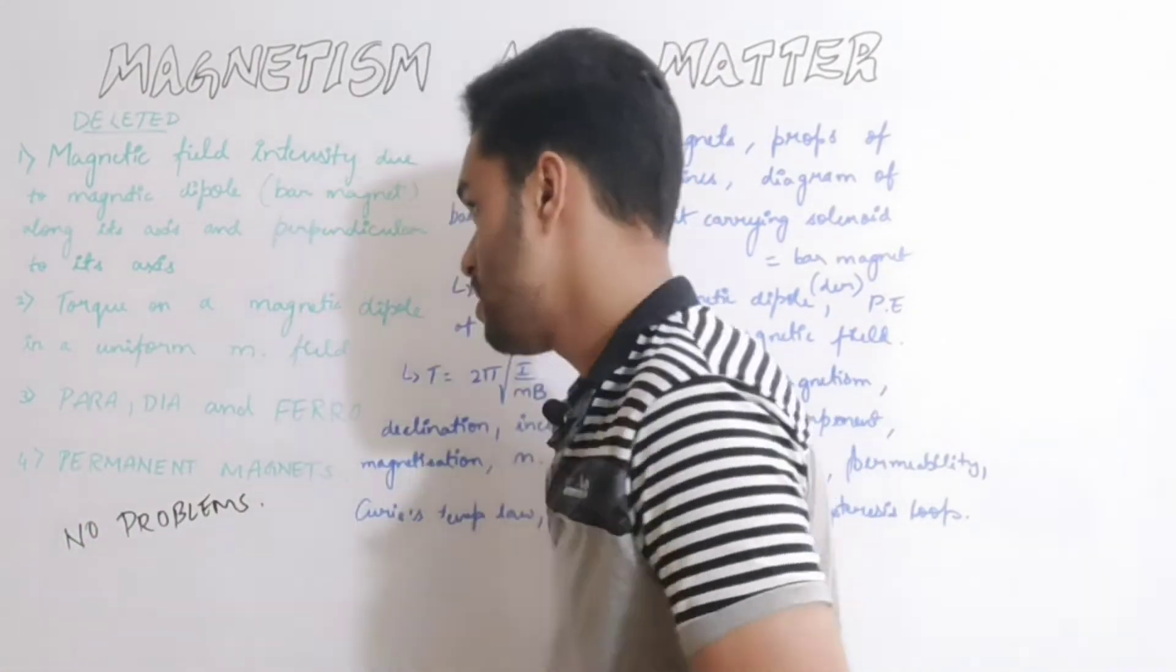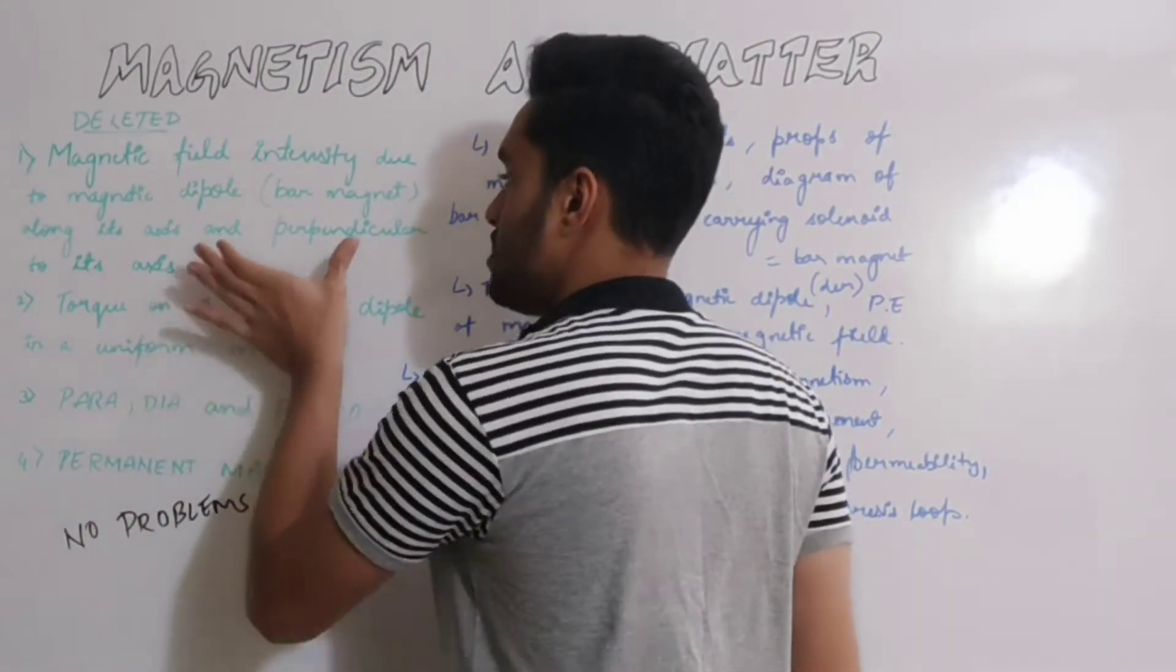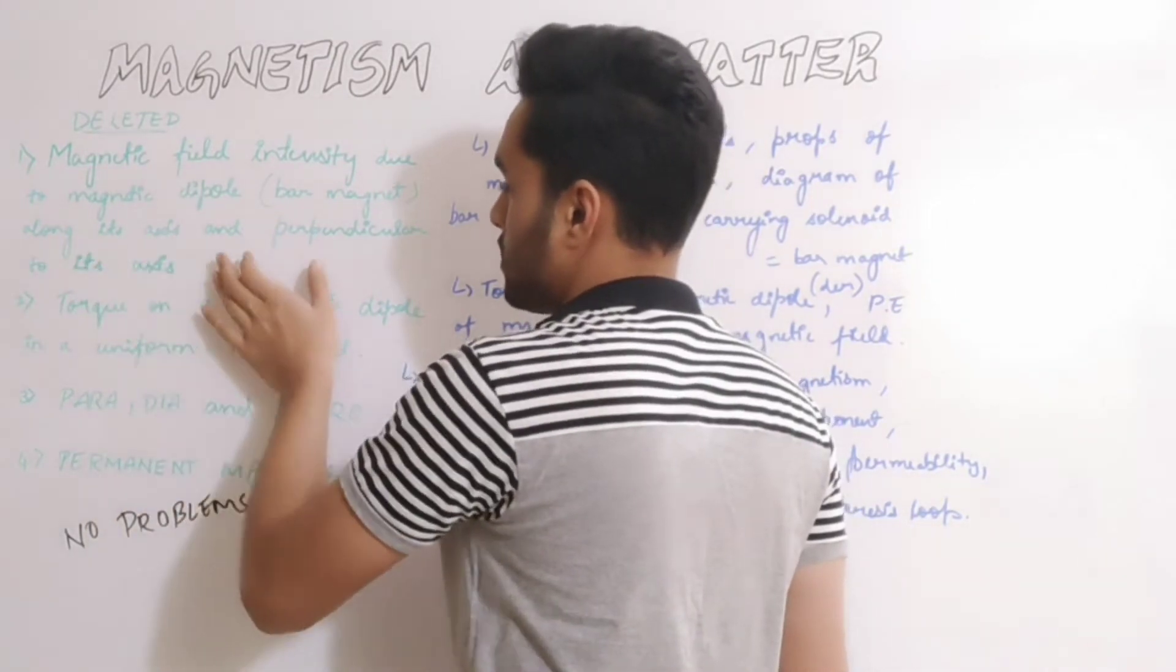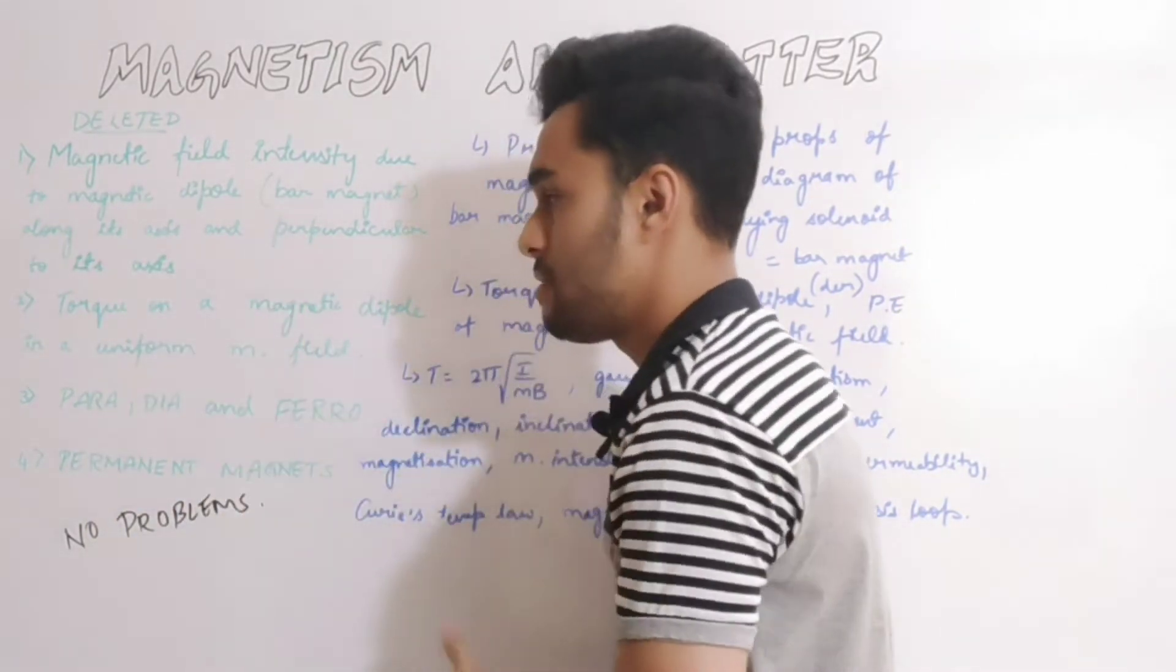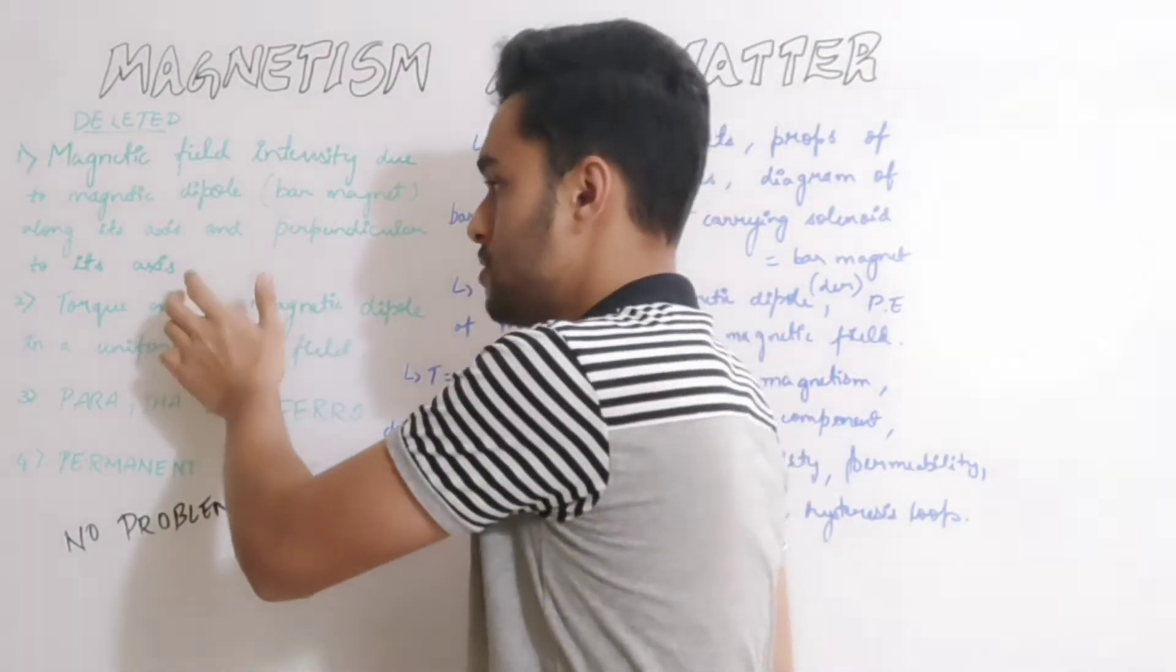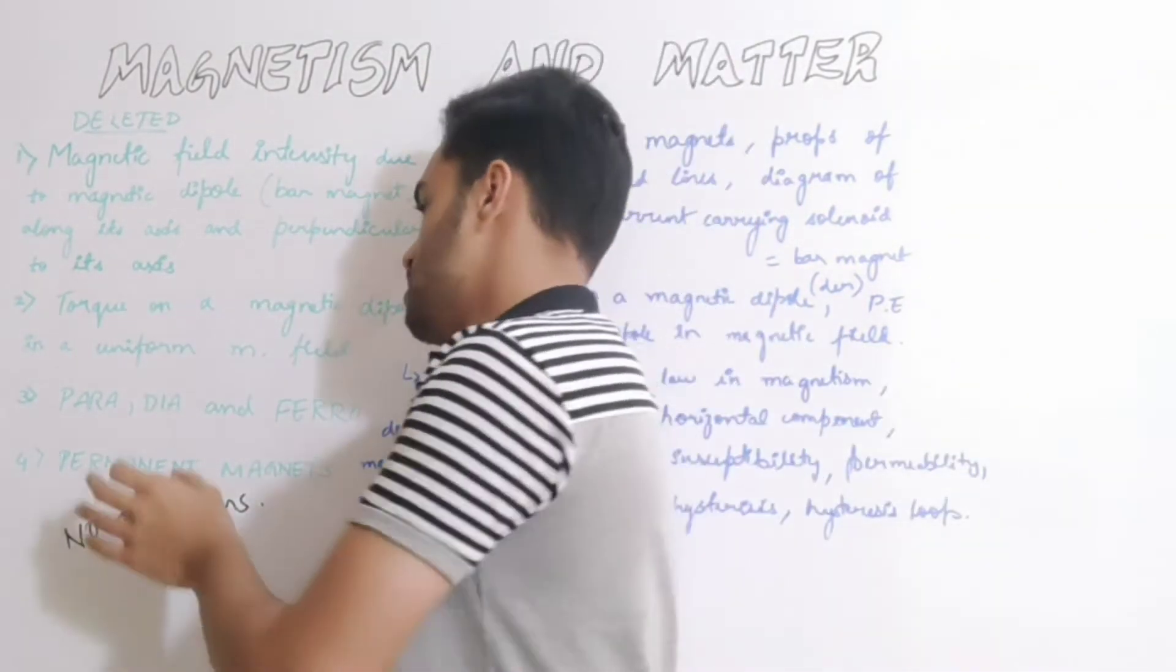First thing is magnetic field intensity due to magnetic dipole, which means bar magnet along its axis and perpendicular to its axis. The derivation along its axis is separate and perpendicular to its axis is separate, so you have to do both derivations.